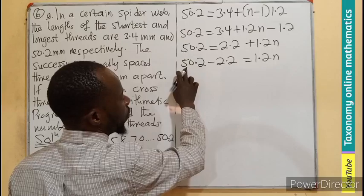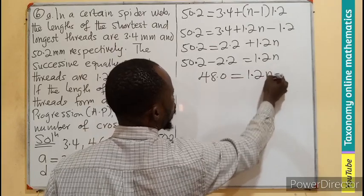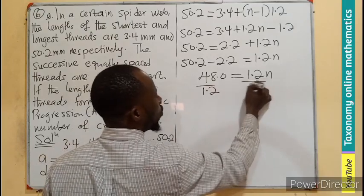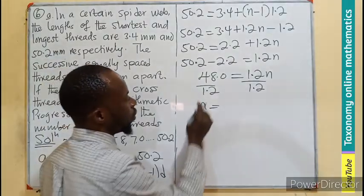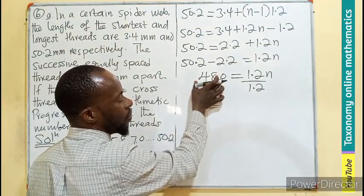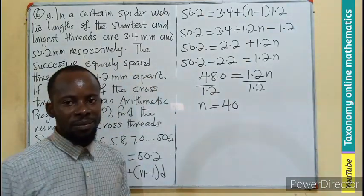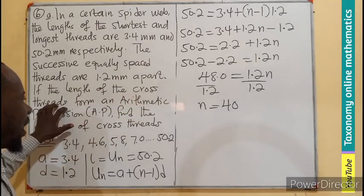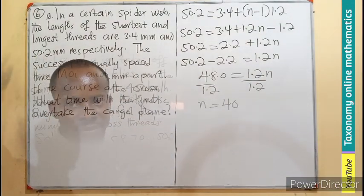50.2 minus 2.2 equals 1.2n. This will be 48.0 equals 1.2n. Now let's divide by the coefficient 1.2. That will give rise to our n to be equals to, multiplying by 10 will give you 480 and 12, which is 40. Meaning what you're looking for is 40 cross threads that are in between the longest and the shorter side.